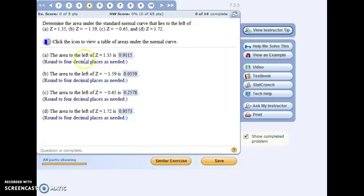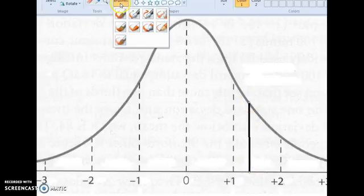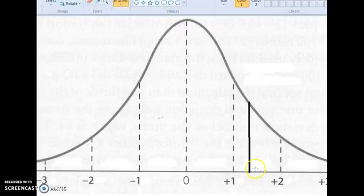The first part of this problem is asking for the area to the left of z equals 1.35. So if we went 1.35 standard deviations away from the mean, so 1 and then 0.35, I'll estimate it's about right here. Draw a line.